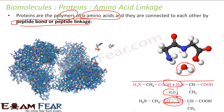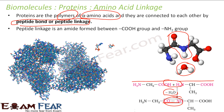This is CO, this is NH — this was formed. This is my peptide linkage. So peptide linkage is formed from the CO-OH and NH2 group.